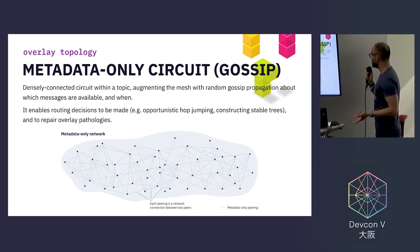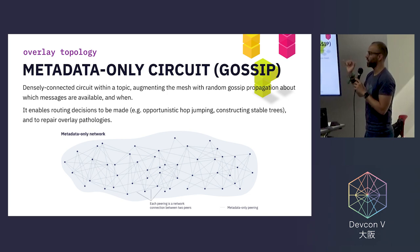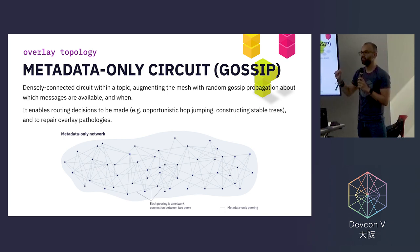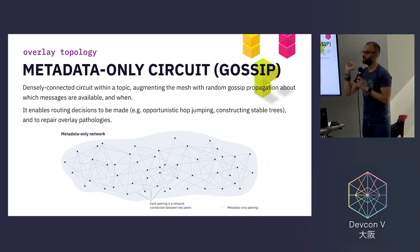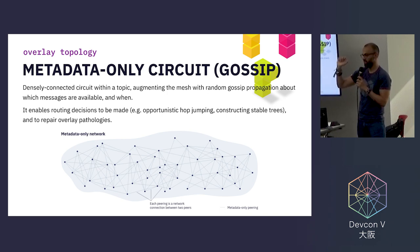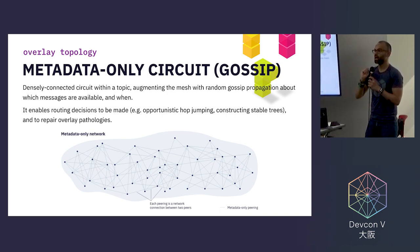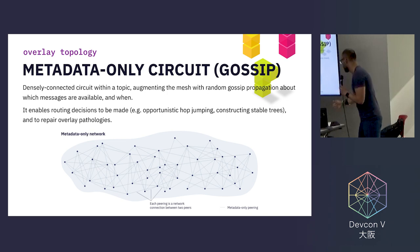The stable mesh is complemented by a metadata-only network — a densely connected network that augments the mesh with gossip propagation about which messages are available. This enables routing decisions: for example, if I have 50 neighbors interested in a particular topic, I will keep six in the stable mesh. The remaining peers become gossip peers — I will not exchange messages with them, but I will collaborate with them by telling them what messages I've seen, without actually pushing messages.